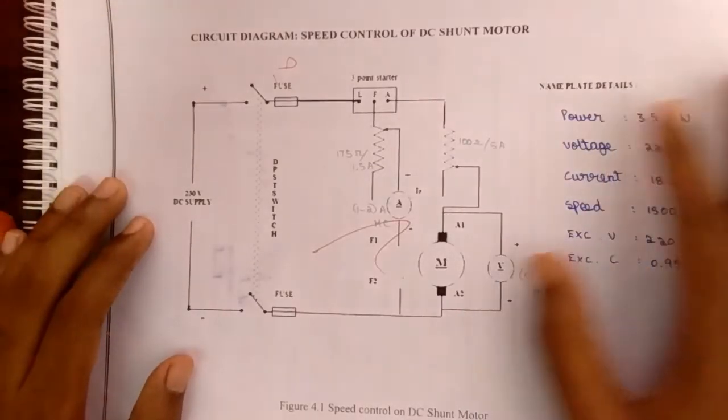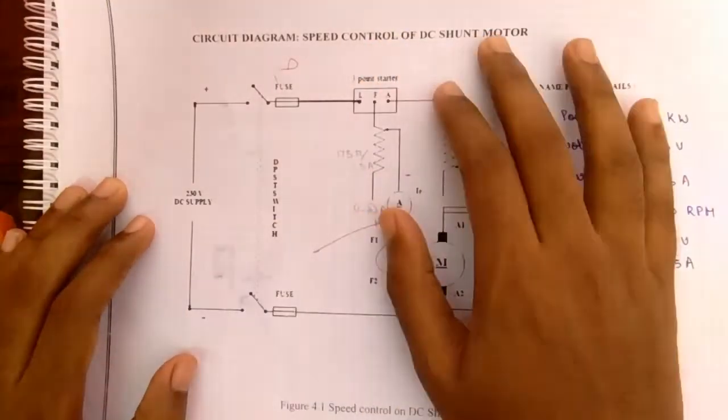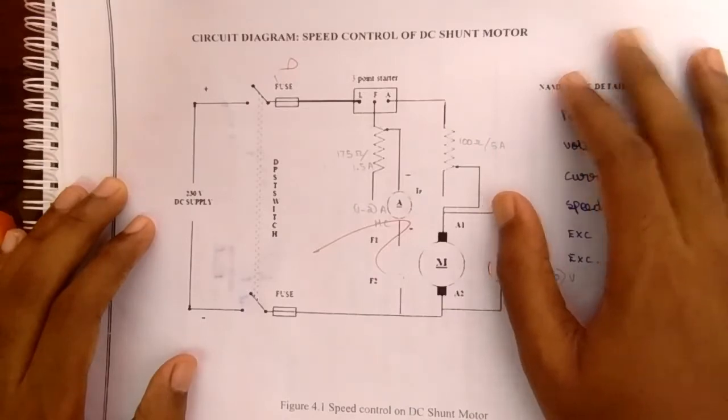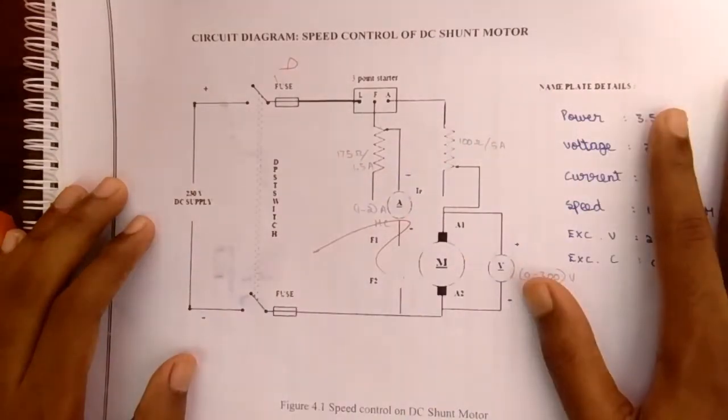Hi guys, in this experiment we're gonna see about speed control of DC shunt motor. So this is the circuit diagram.